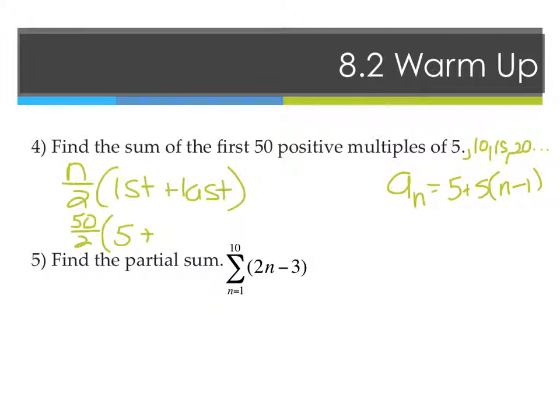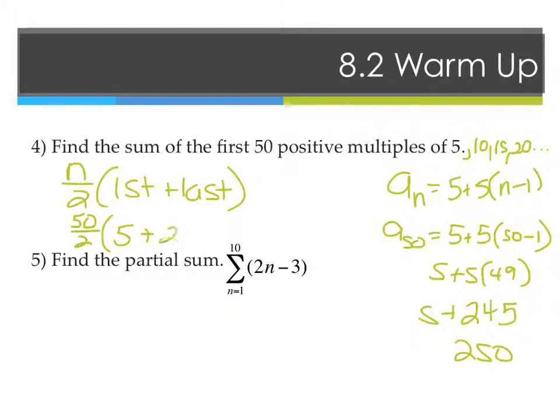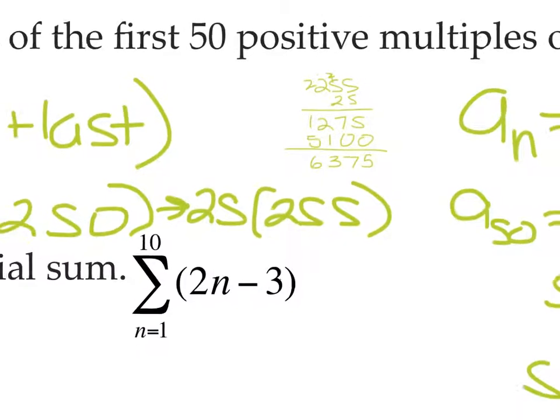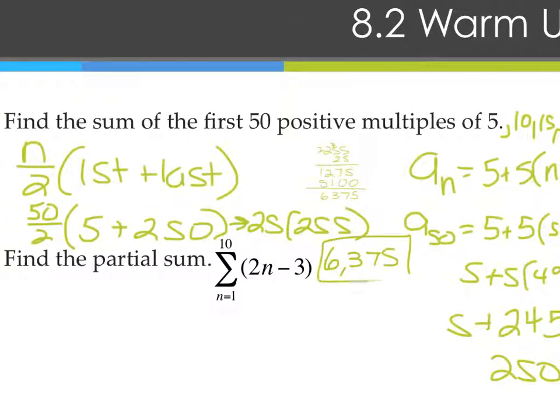So I can say a sub n equals 5 plus 5 times n minus 1. And I want the 50th one. So I can say a sub 50 equals 5 plus 5 times 50 minus 1. 5 plus 5 times 49, which is 250. I could have also taken that 5 and multiplied it times the 50 because that's how many terms there would have been in there. So then from here I'd get 25 times 255, which is 6,375.